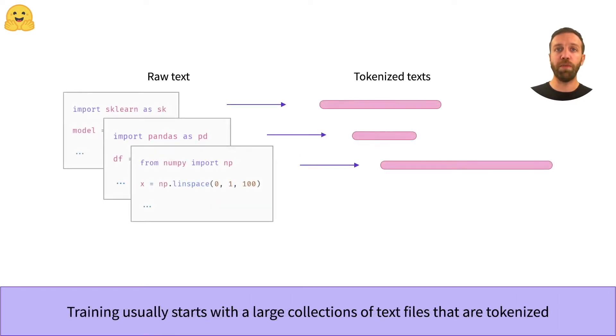To train models such as GPT, we usually start with a large corpus of text files. These files can be web pages scraped from the internet such as the Common Crawl dataset, or they can be Python files from GitHub like the ones you can see here.